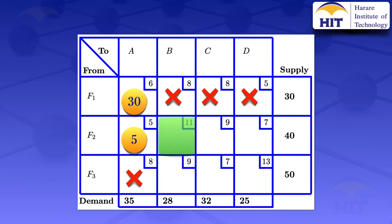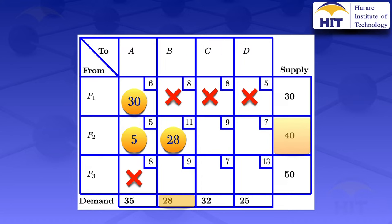We are looking at F2 to B. We look at the supply — the 40 — and the demand — the 28. But when looking at the supply side, in this row we have already allocated a 5. So considering the supply constraints, what we can allocate is 40 minus 5, which gives us 35. Then looking at the demand, the maximum we can allocate is 28. So we take the minimum of 28 and 35, which gives us 28. We allocate 28 in that cell.